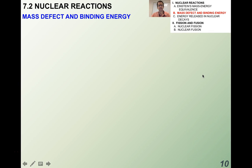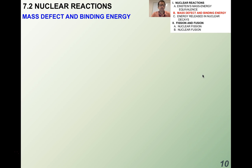Hi students, and welcome to the second video in topic 7.2, Nuclear Reactions. In the last video, we talked about mass-energy equivalence and Einstein's special theory of relativity. We're going to talk more now about mass — specifically what's called a mass defect and the binding energy, and some energy release in nuclear decays. In the next video, we'll talk about nuclear fission and fusion.